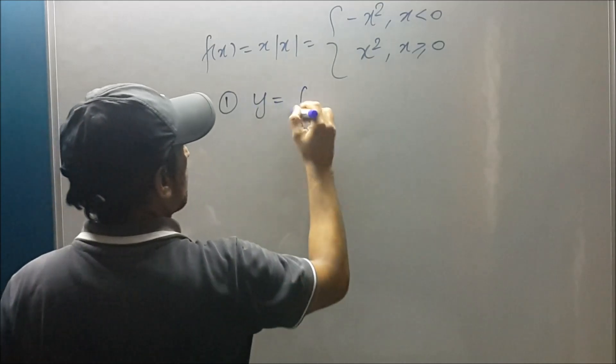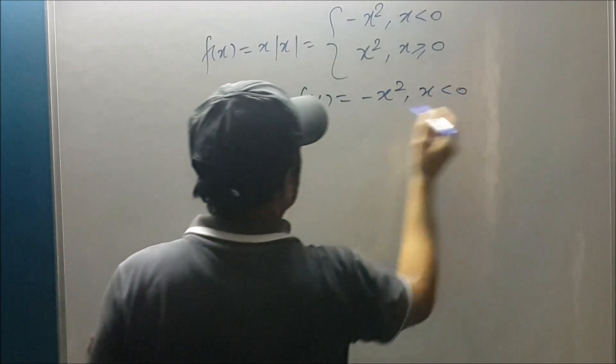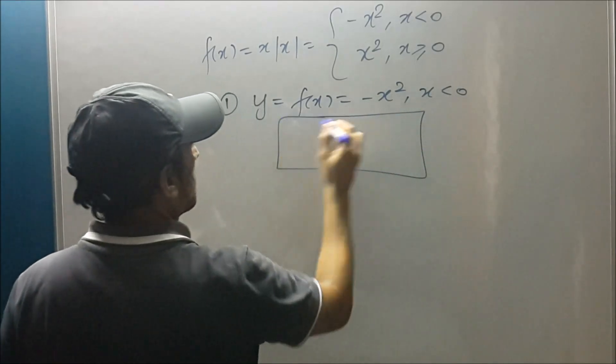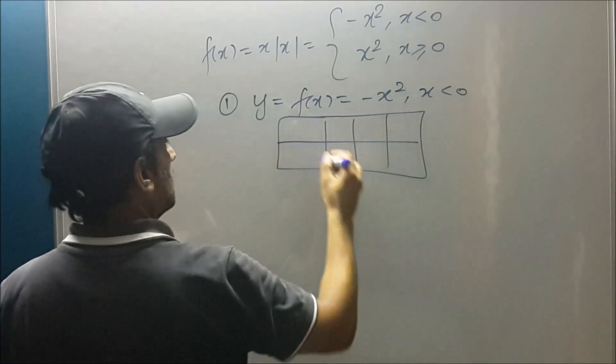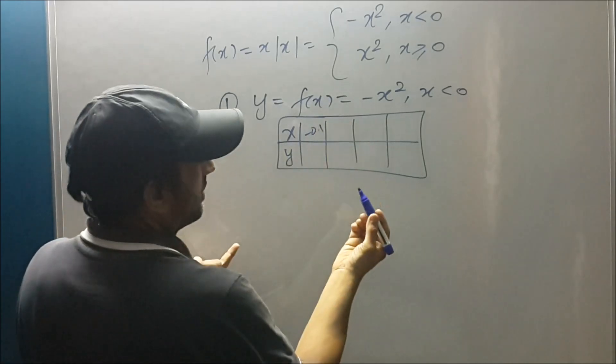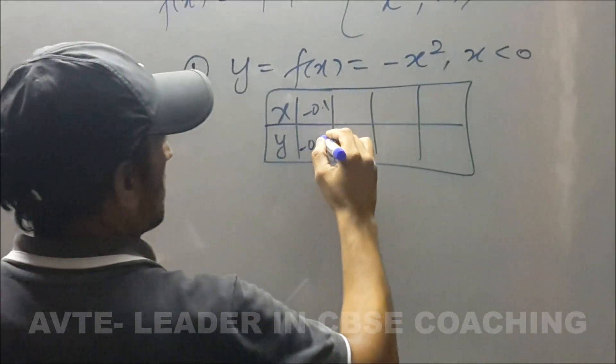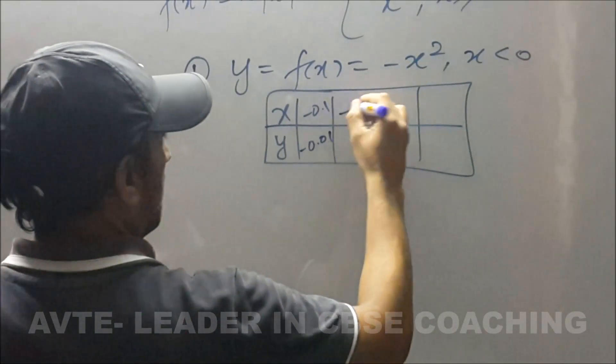The first is y equals f(x) which is equal to minus x squared when x is a negative quantity. So we will make table with the numbers, negative numbers starting with say minus 0.1. This, the square and then a negative sign outside will take it to minus 0.01.